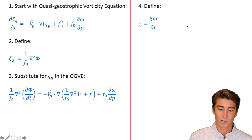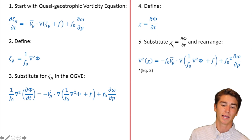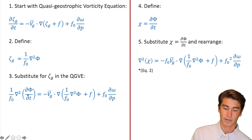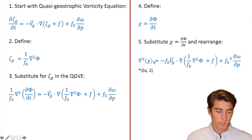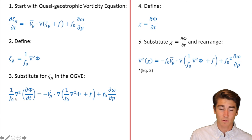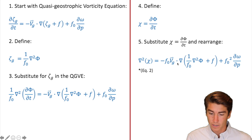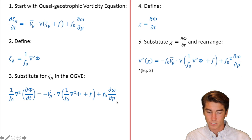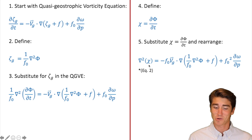Step four, once again we're going to define chi equals d-phi/dt. Step five, we're going to substitute that chi in for d-phi/dt. Where was it? Right there — so that's just going to become a chi. You'll also notice that the f-zero came over to the right-hand side, there's no longer an f-zero on the left, now there's one there, and that f-zero became f-zero squared. We're going to call this equation two.